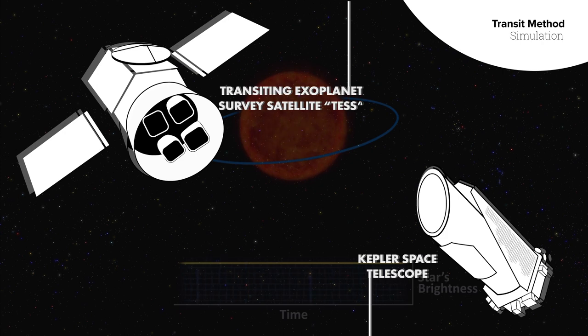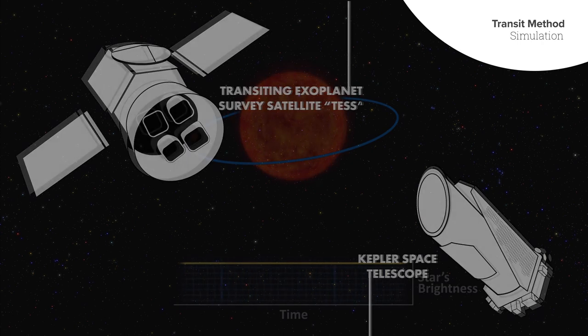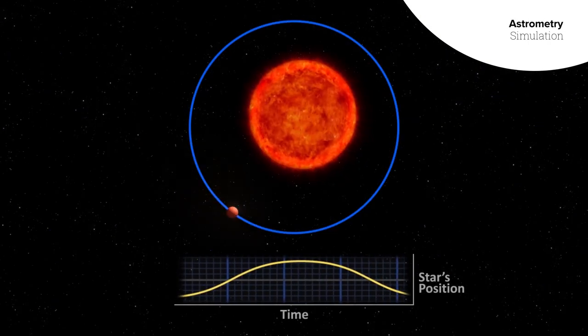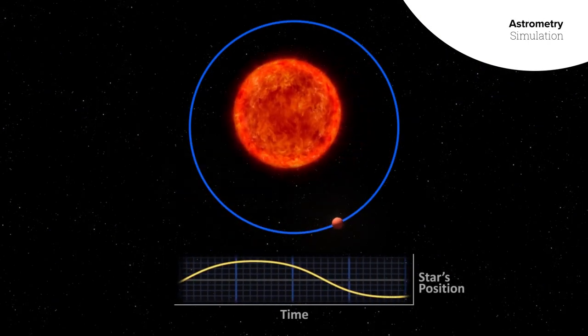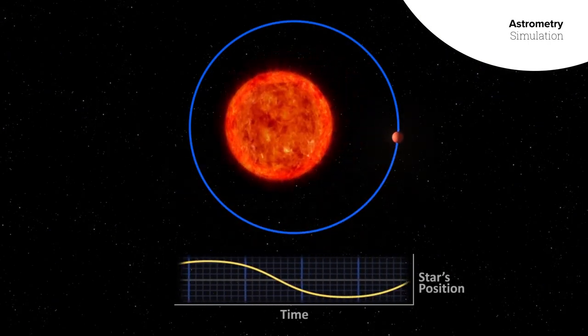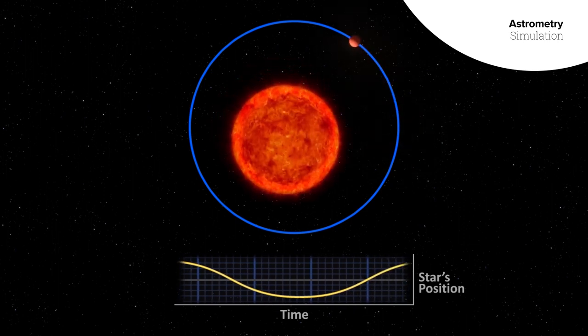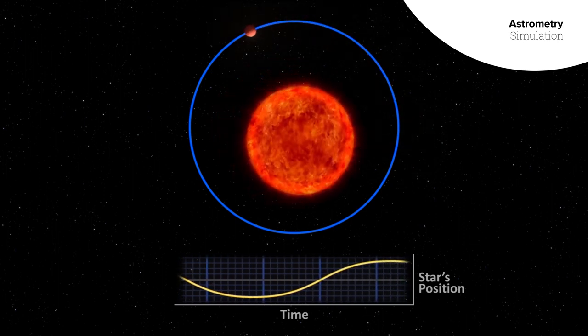The Transiting Exoplanet Survey Satellite uses the same technique on our nearest neighbor stars. Another technique observes very small changes in the star's position in the sky, the wobble that occurs when an unseen planet's gravity tugs on its host star.